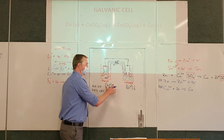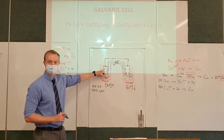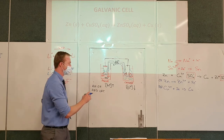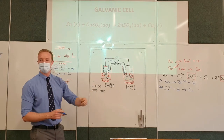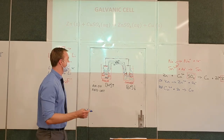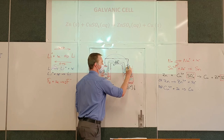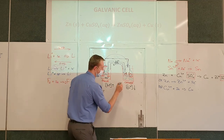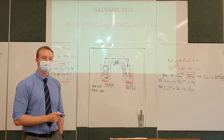To summarize observable changes: the cathode always increases in mass, the anode always decreases in mass. The concentration of zinc ions increases, while the concentration of copper ions decreases. In terms of polarity: electrons flow from the anode side to the cathode side. Since electrons are negatively charged and flow from negative to positive, the cathode is always the positively charged electrode.